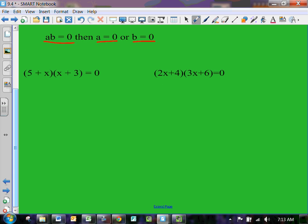So how we're going to use that is we have five plus x times x plus three. Imagine this is our A and that's our B, and that equals zero. We're going to break this apart into two separate equations: five plus x equals zero, or x plus three has to equal zero.